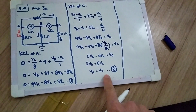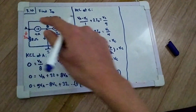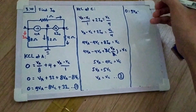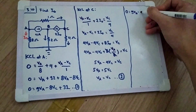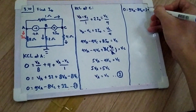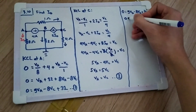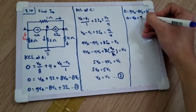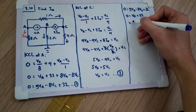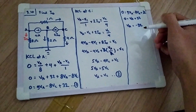We substitute equation two into equation one. Since VA equals VC, we have zero equals 9·VA minus 8·VA plus 32, which simplifies to zero equals VA plus 32. Solving gives VA equals minus 32.